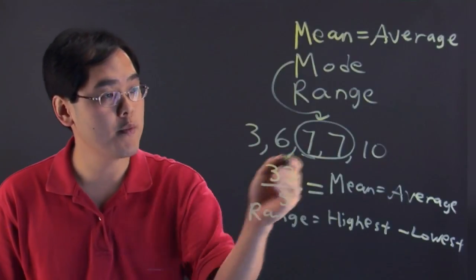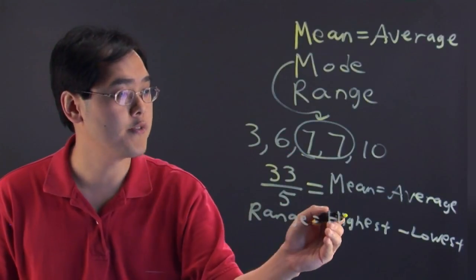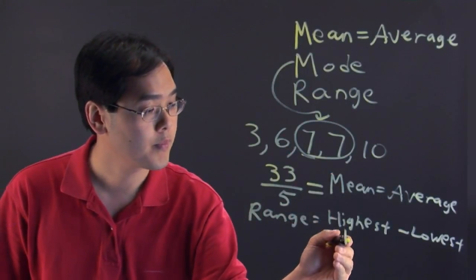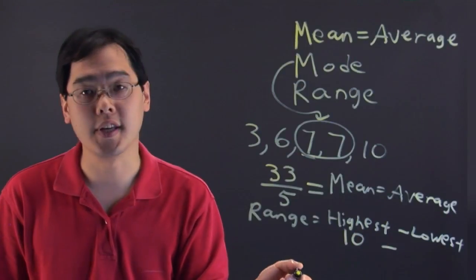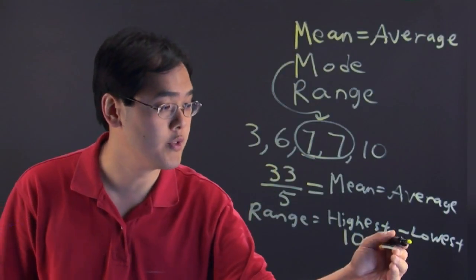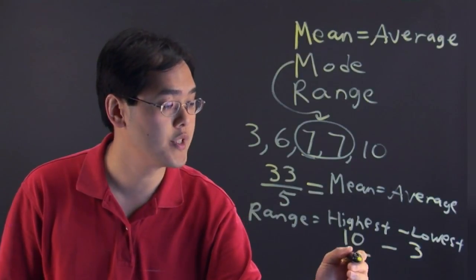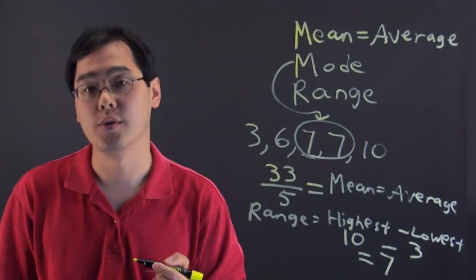As you can see from this list, the highest value is 10, and the lowest value is 3. So we're going to do 10 minus 3, which coincidentally is also 7.